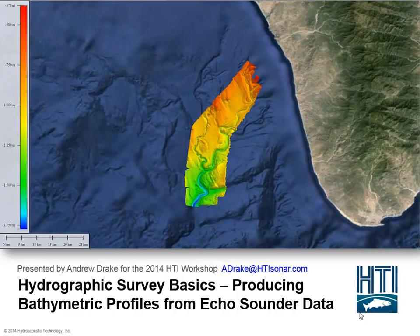This is a multi-beam swath of a submarine canyon off the coast of Baja, California. It was collected by a University of Washington student for a senior thesis. It shows some pretty interesting geological features. It was collected with a Kongsberg system, an EM302. You can see it produces a nice image. The actual data is pretty high resolution. This is the kind of thing that requires planned-ahead bathymetry surveying — it's not something you can interpolate from.